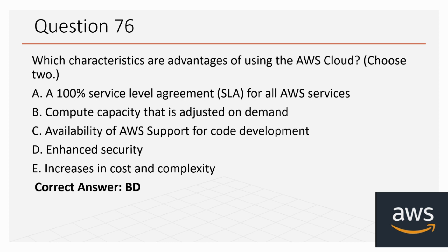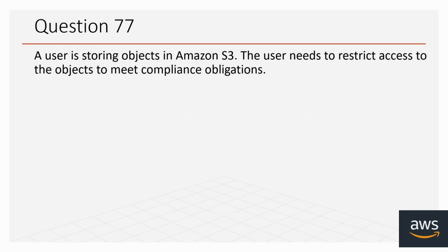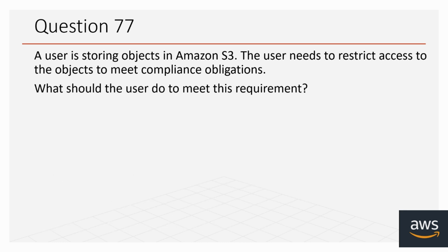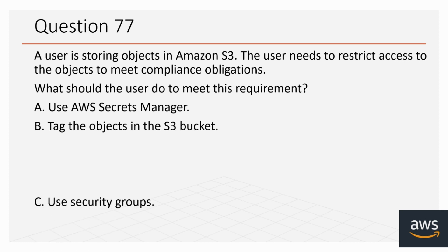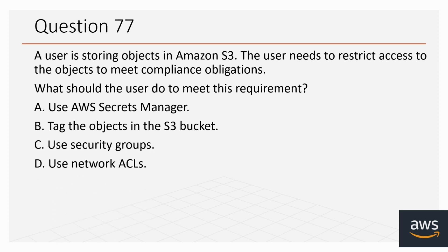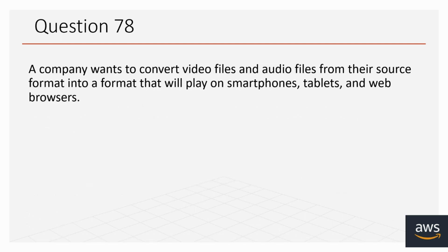Question 77: A user is storing objects in Amazon S3 and needs to restrict access to the objects to meet compliance obligations. What should the user do? Options: A: Use AWS Secrets Manager, B: Tag the objects in the S3 bucket, C: Use security groups, D: Use network ACLs. The correct option is B, tag the objects in the S3 bucket.